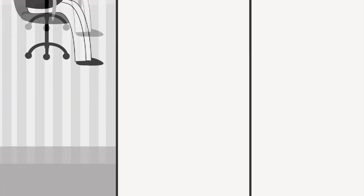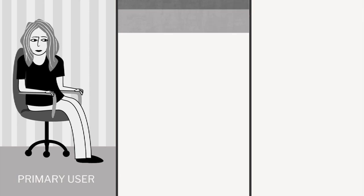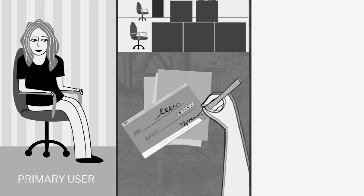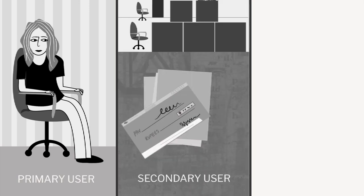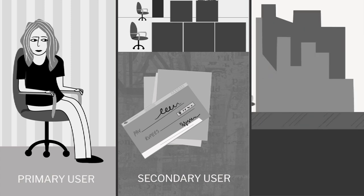In the case of the office chair, the primary user is the person who is going to sit in the chair. The secondary user could be the people buying and maintaining the chair, and the tertiary users are the ones who are manufacturing and transporting it. The designer must understand the requirements of each user so that all the user issues are taken care of.